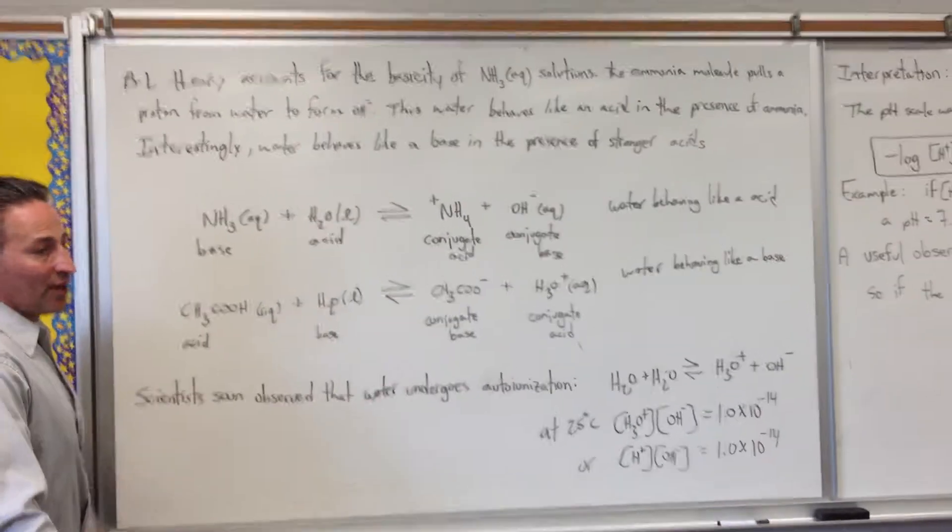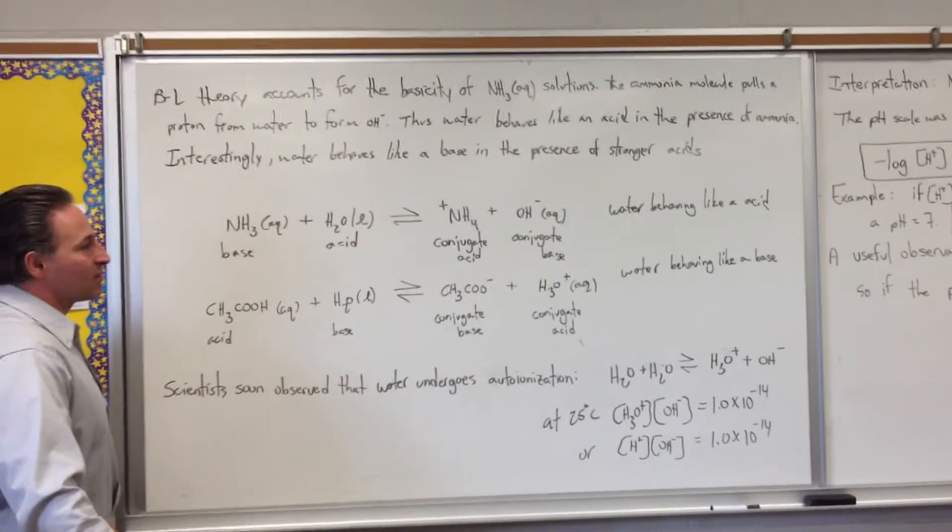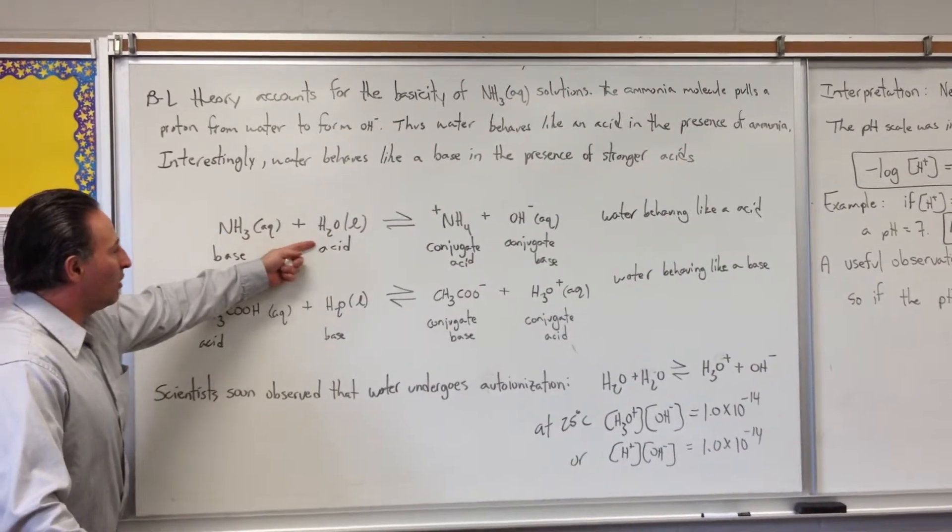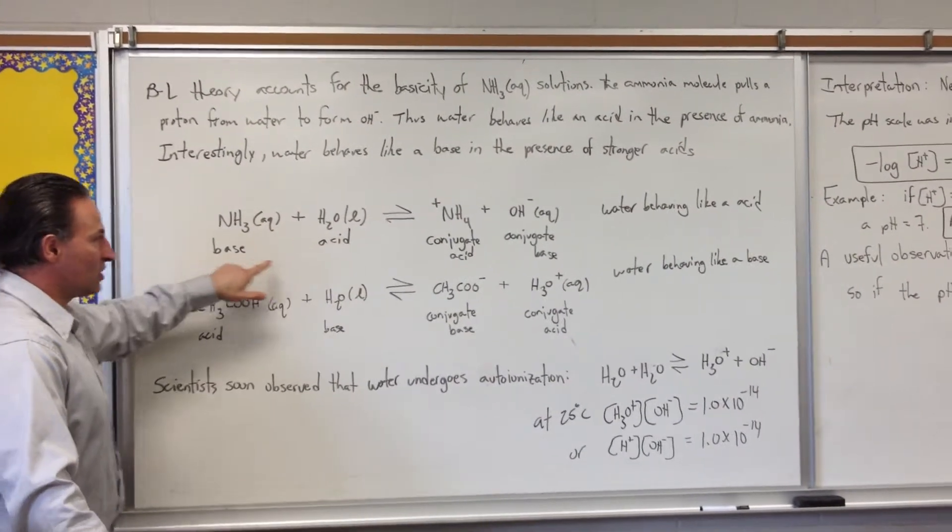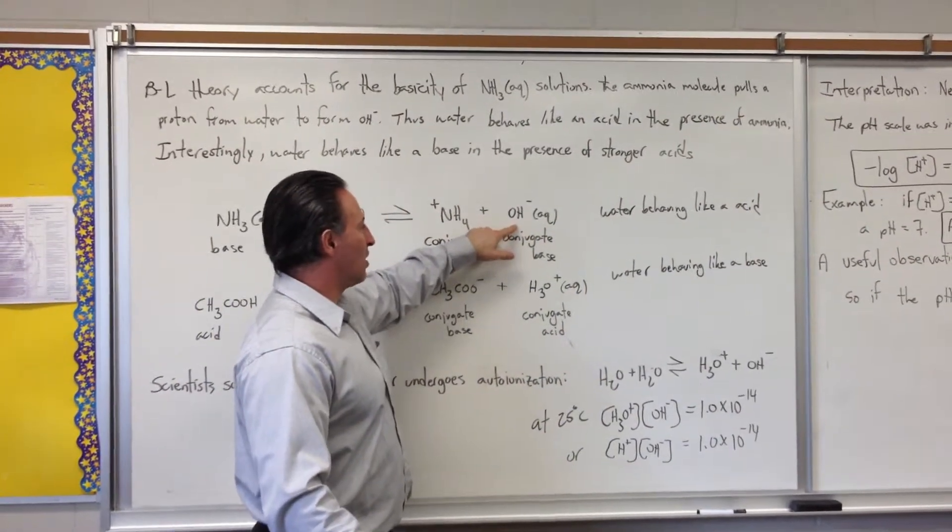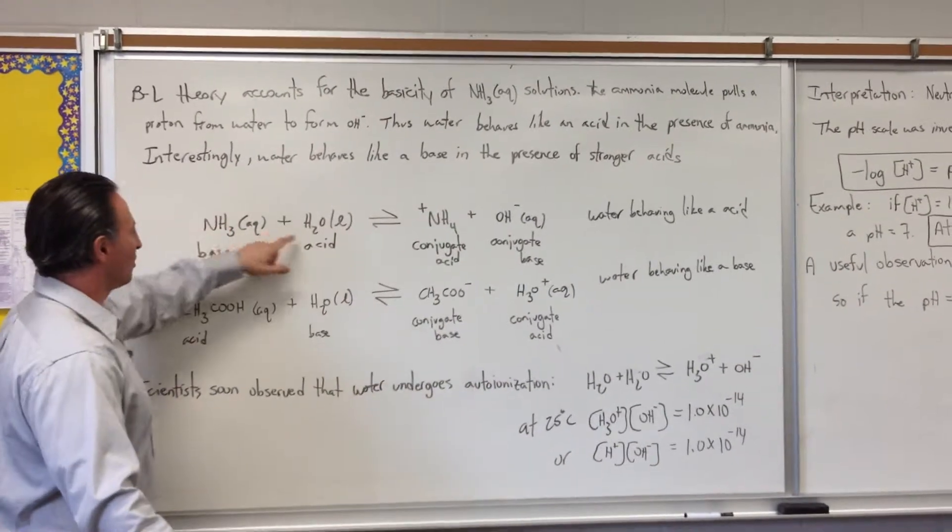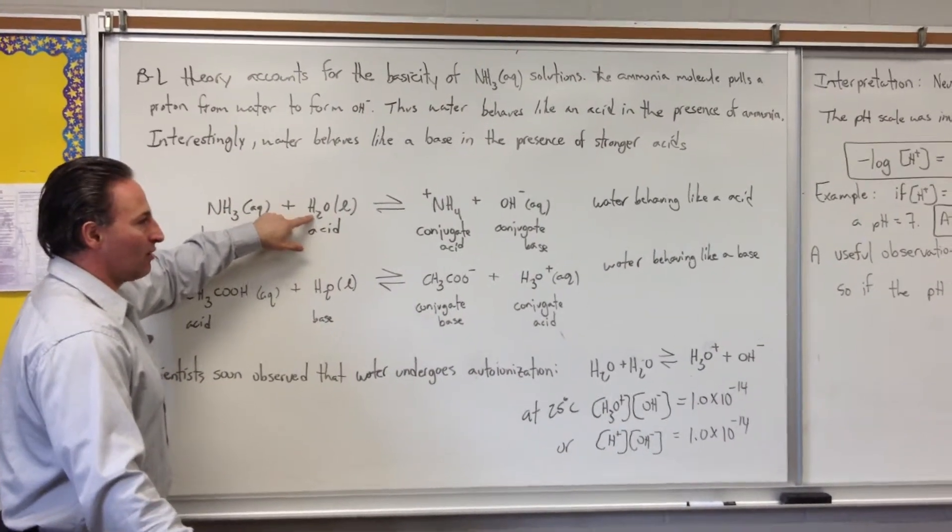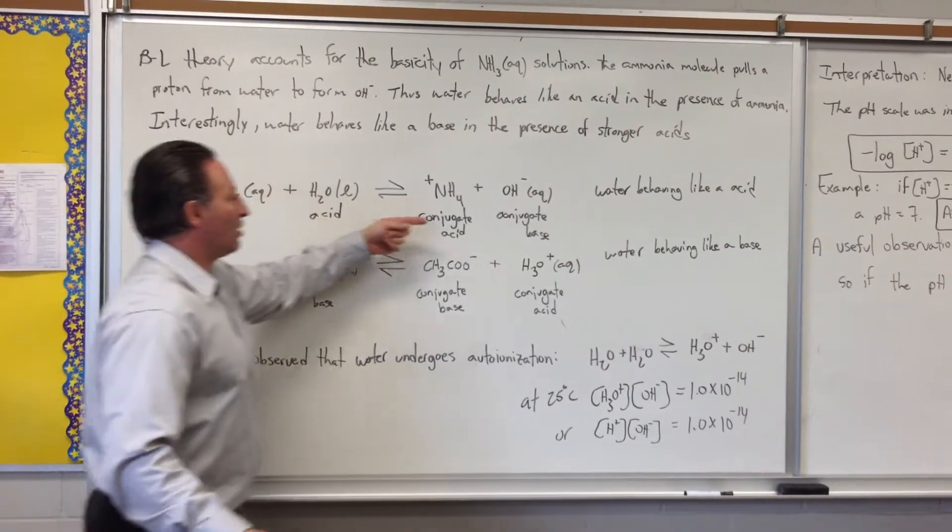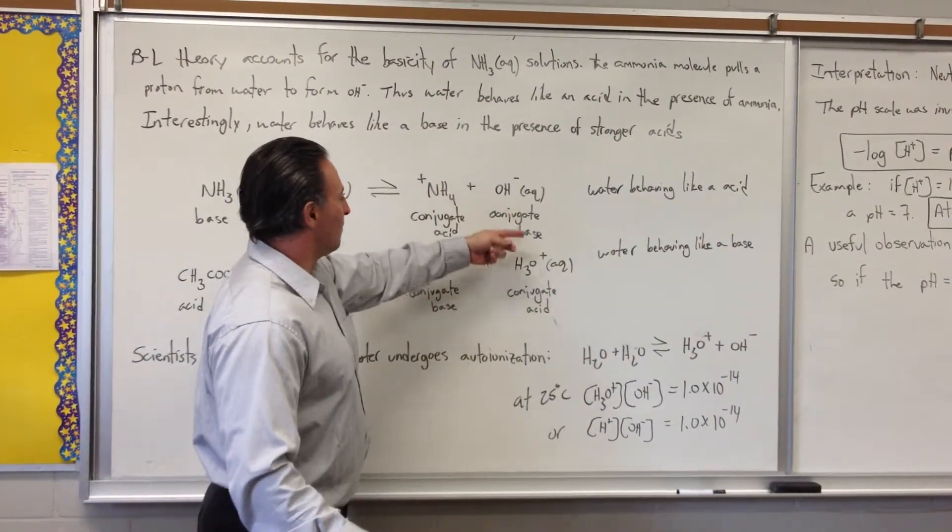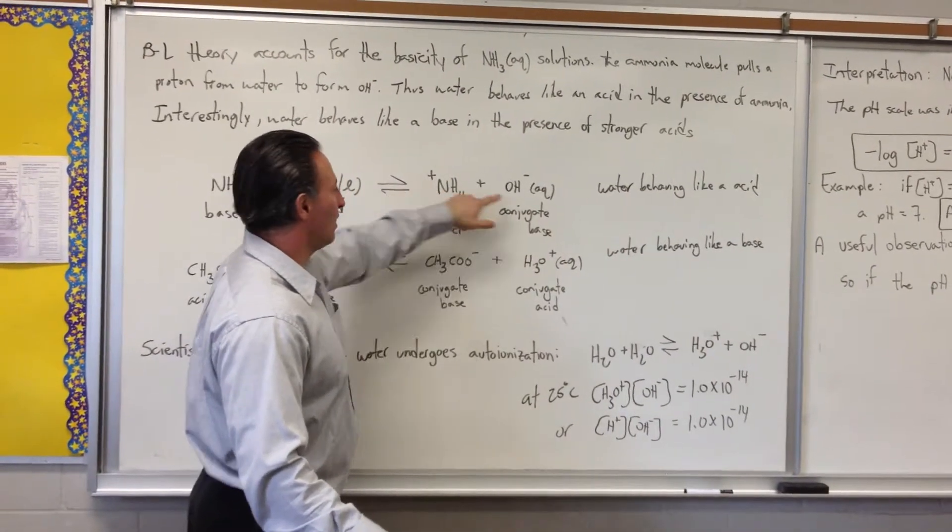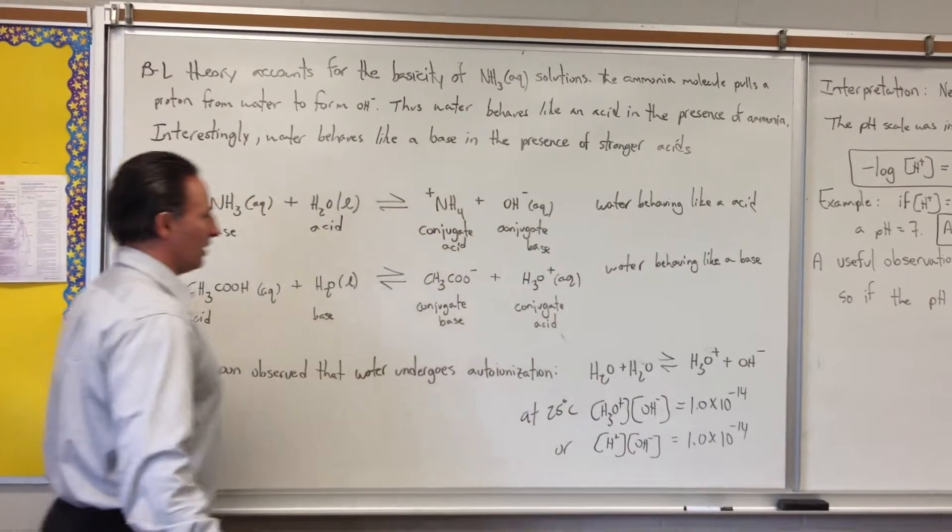Interestingly, water also behaves like a base in the presence of a stronger acid. You have ammonia reacting with water, which behaves like an acid under these conditions, to form ammonium ion and a conjugate base, which is hydroxide ion. The ammonia molecule has pulled a proton off the water. We have a base-acid pair, and then you get a conjugate acid-base pair on the other side of the equation, because ammonium behaves like a weak acid, whereas hydroxide is clearly a base.